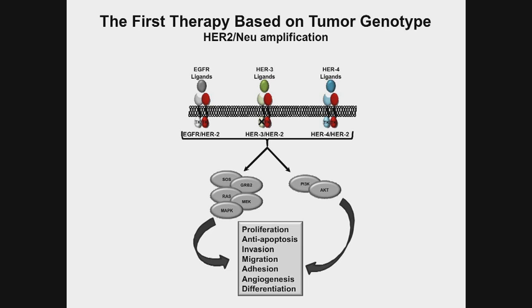More importantly, HER2 has become a very important target in the roughly 15 to 20 percent of patients who have amplification of this protein. We can interfere with the function of this protein either with antibodies like trastuzumab or pertuzumab, which bind to the outside of the cell and block the function of the protein, or small molecule inhibitors such as lapatinib, which bind to the protein and inhibit the kinase activity. In a very real sense, this is genomic medicine that's been going on for quite some number of years.